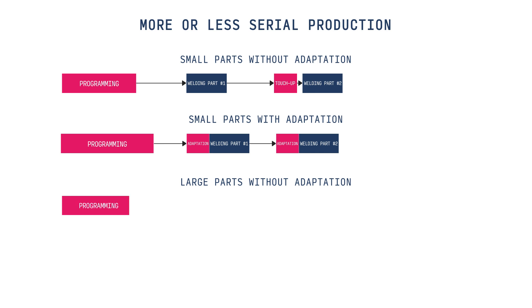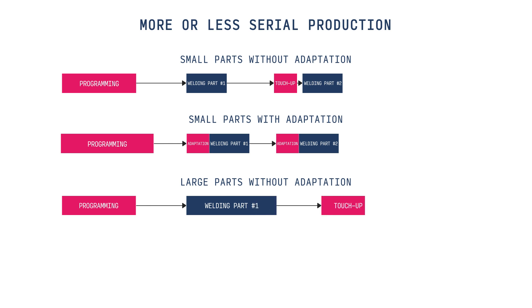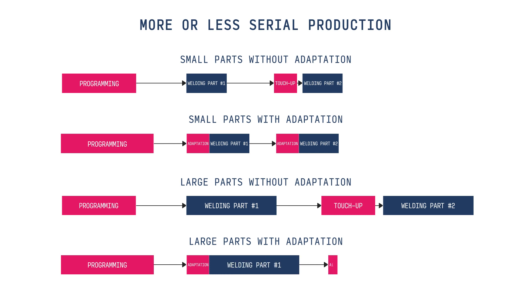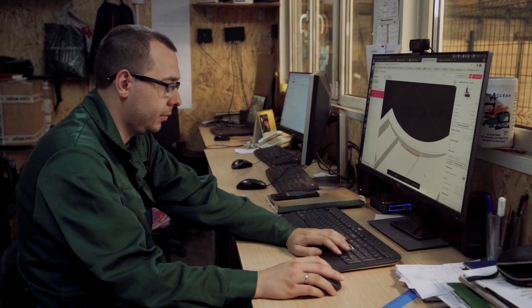Let's consider another situation. Suppose you have large parts but the production is still serial — meaning you weld identical parts. In this case, adaptation becomes more efficient. Large parts take much longer to program. It's also much more likely that touch-up procedures will be required for almost each new part, because it is not easy to fix the part in exactly the same position each time, and higher deviations are typical for larger parts. So you will either spend a huge amount of time on touch-ups every time, or you will have a lot of rework. In this scenario, adaptation is very efficient and will reduce the cost of production. You should consider Abadji software to reduce the time of programming of welding and adaptation procedures.